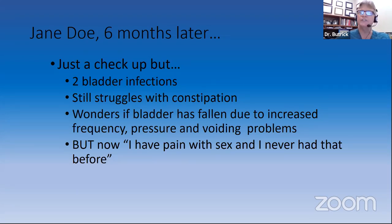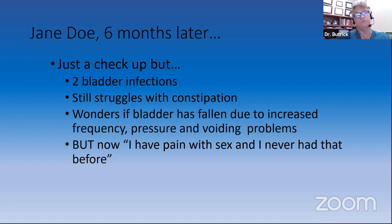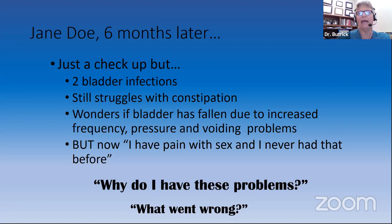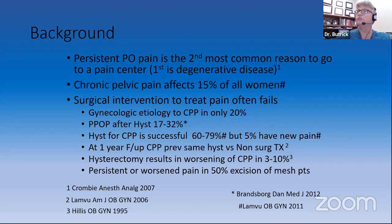She came back six months later and made two or three concerning comments. She'd had two bladder infections since the surgery. She was still struggling with constipation and thought the rectocele had been fixed. She wonders if her bladder has fallen back down because she has frequency, pressure, and difficulty passing urine just like before surgery. And now the patient says, 'I have pain with sex and I never had that pain prior to the surgery. Why do I have these problems and what went wrong with the surgery?' This is not the kind of patient you want to see in your practice.